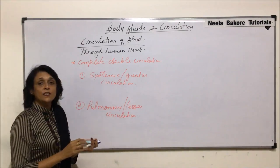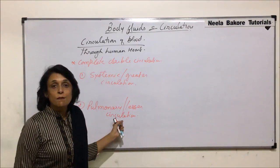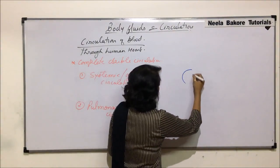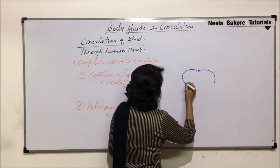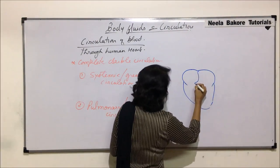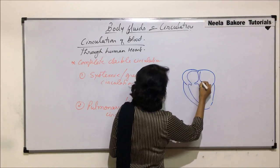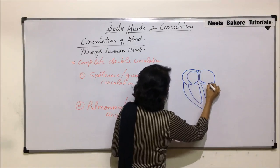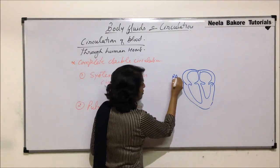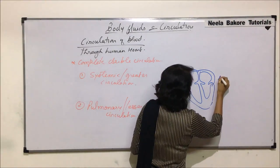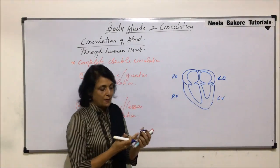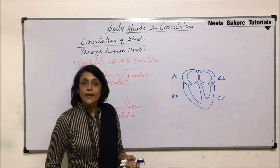Let us first understand what exactly we mean by these two types of circulations. Suppose we draw the same heart in a slightly simpler manner. This is the heart and these are the four compartments. Let us label them: right auricle, left auricle, right ventricle, and left ventricle.